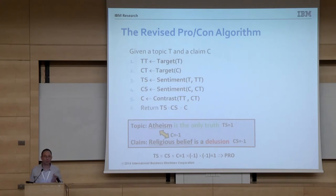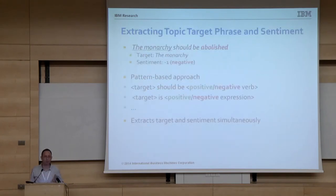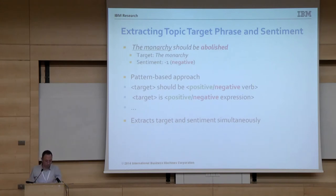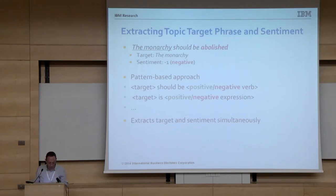Next I'll briefly describe how we implement each of these components. Starting with the topic: topics are usually short sentences with a regular structure, so a pattern-based approach can work here. We define patterns like 'the target should be' followed by a positive or negative verb — for example, 'the monarchy should be abolished' — or 'target is a positive or negative expression,' and so on. This way we can extract the targets and the sentiment simultaneously.